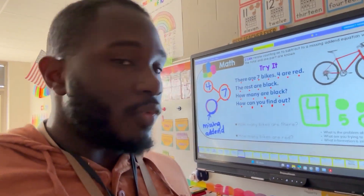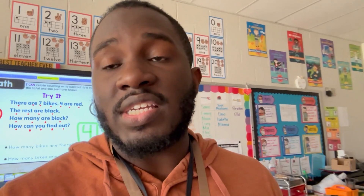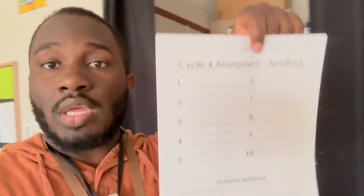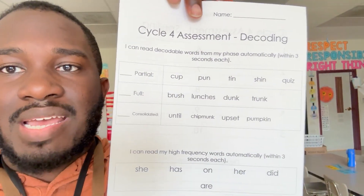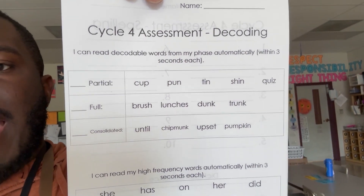In phonics, we're doing short U and QU. We've practiced sight words and decodable text this week. Tomorrow they'll get their decodable questions for cycle four. Friday is our assessment: I give ten words, they write them, then there's a dictation sentence — usually four to six words. On the back is the one-on-one portion. Depending on their phase, they read those words and I check if they can read them automatically. After that we move into sight words for the week and check those automatically as well.